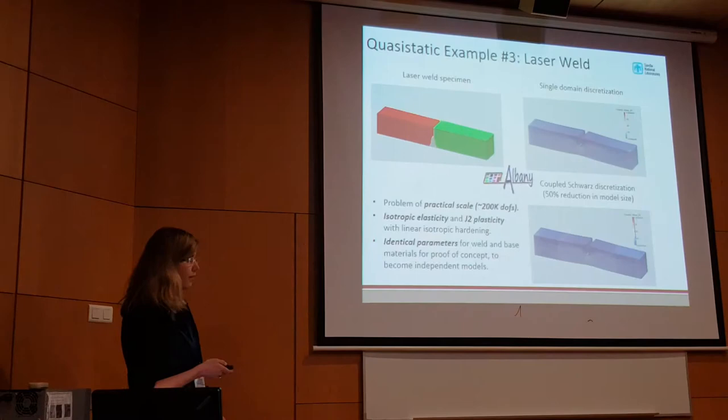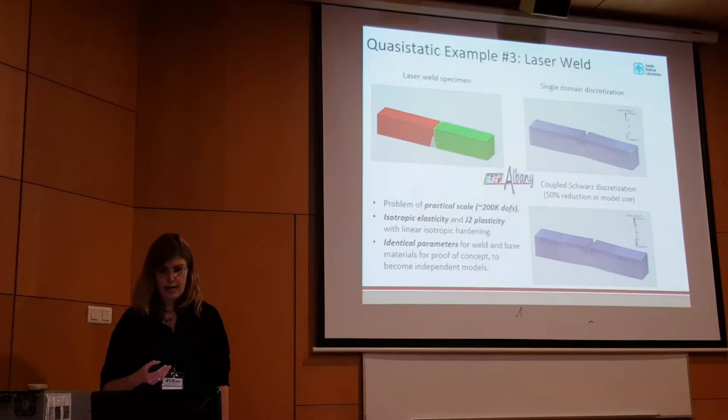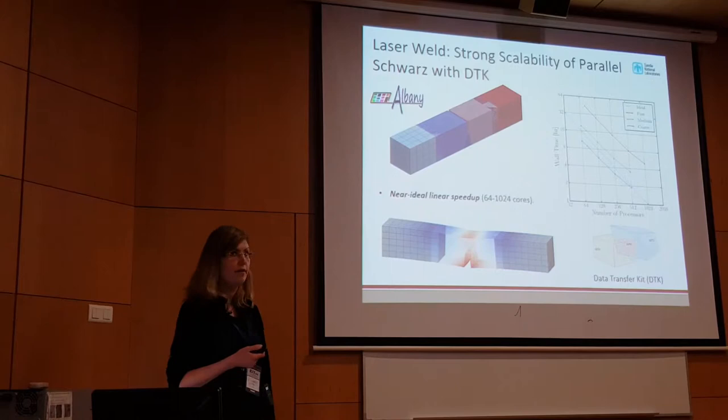The last quasi-static example is a more production-like problem — a laser weld specimen. This also tests more than two subdomains, using three subdomains. We're able to show a 50% reduction in model size relative to a single-domain simulation to get the same accuracy, and also near-ideal linear speedup up to about 1,000 cores of the parallel implementation.